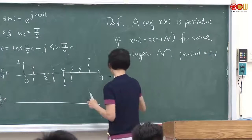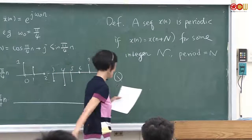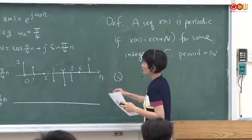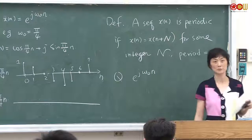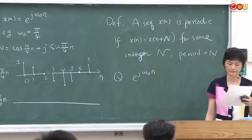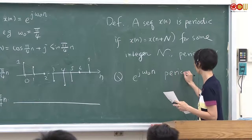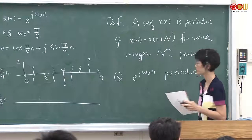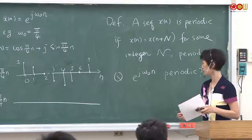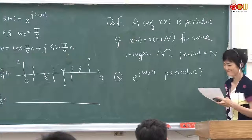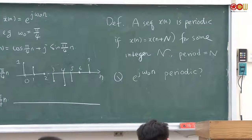Now here's a question: suppose we have a complex exponential signal like this — is it always periodic? Think about it, and tell me what you think next time.